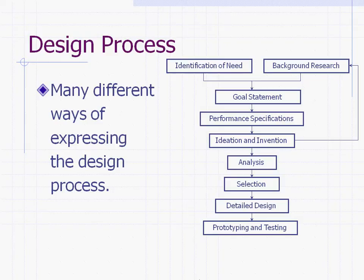It's important to note that while these steps do proceed in this manner, there can be some loop-backs — like from ideation and invention looping back to background research. We will always say to your design team that it is possible to go back and add something to a previous piece if you feel you've left something out. Your group hand-ins will be compiled according to this chart. For example, your first deliverable may include your identification of need, background research, and goal statement. Then performance specifications, ideation and invention may come next, followed by analysis and selection, and finally detailed design and prototype.